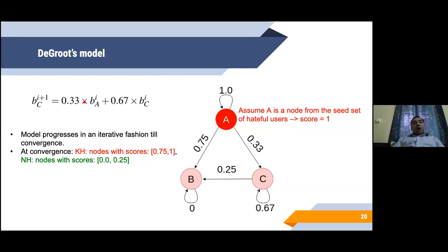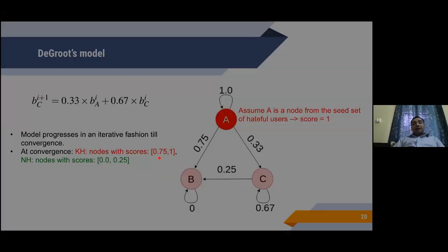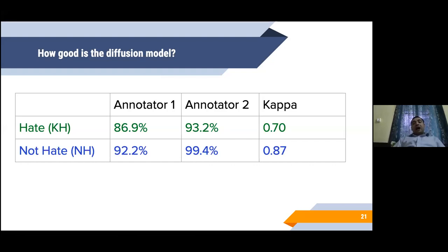Once we have got the score for every node, we do some additional checks to understand whether whatever we have labeled are actually correct. We asked two annotators to annotate 100 such users, 50 from the hateful group and 50 from the non-hateful group. We observed that the annotators have a high agreement with our model predictions, as well as the internal annotator agreement is pretty acceptable, the kappa being somewhere between 0.7 to 0.87.